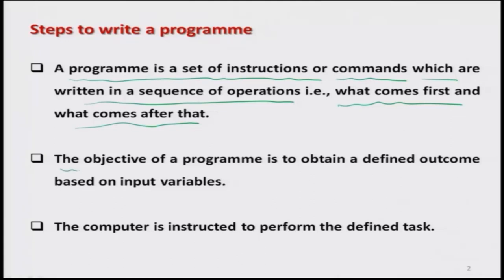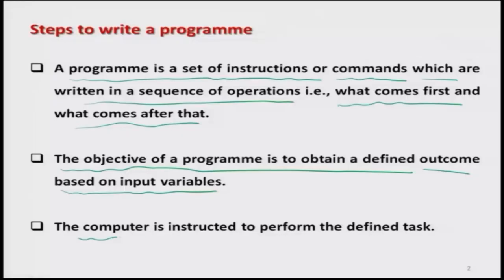Whenever you try to write a program, first the objective is defined in terms of outcome, and this outcome is based on some input variables. We have to divide the entire program into two parts: what is the outcome and what is the input. Based on the choice of output and input, we instruct the computer to do a defined task — that is what we call a program.